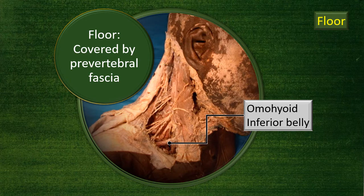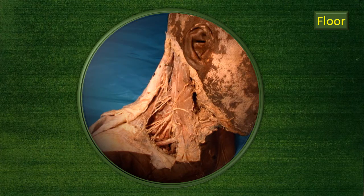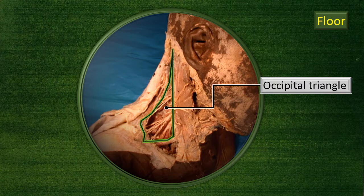The inferior belly of the omohyoid muscle divides the posterior triangle into an upper larger triangle and a lower smaller triangle. The upper triangle is formed by the posterior border of the sternocleidomastoid, the anterior border of the trapezius, and the omohyoid muscle as its base — this is the occipital triangle.